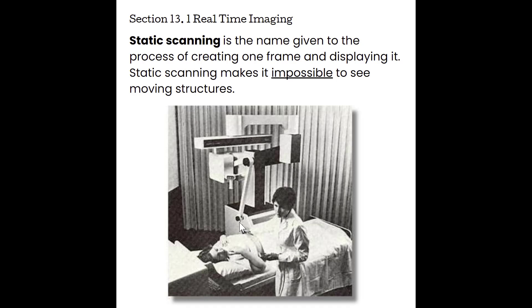In this image we have the sonographer, the patient, and the articulating arm with a transducer at the end. The sonographer would sweep side to side across the abdomen, and each sweep created one scanline. So if making an image of 50 scanlines, it would take 50 passes back and forth. Those 50 scanlines would then be added together to make just one picture, which is why it would be impossible to see moving structures.